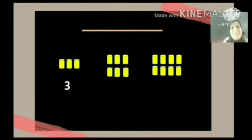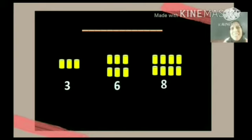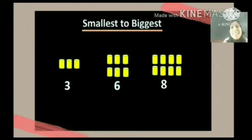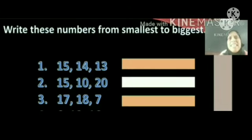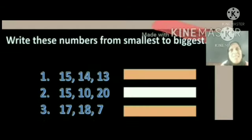Here you are seeing three cylinders. The second group has six cylinders and finally eight cylinders. The numbers are in order from smallest to biggest. Now it is easy for you to arrange given numbers from smallest to biggest.